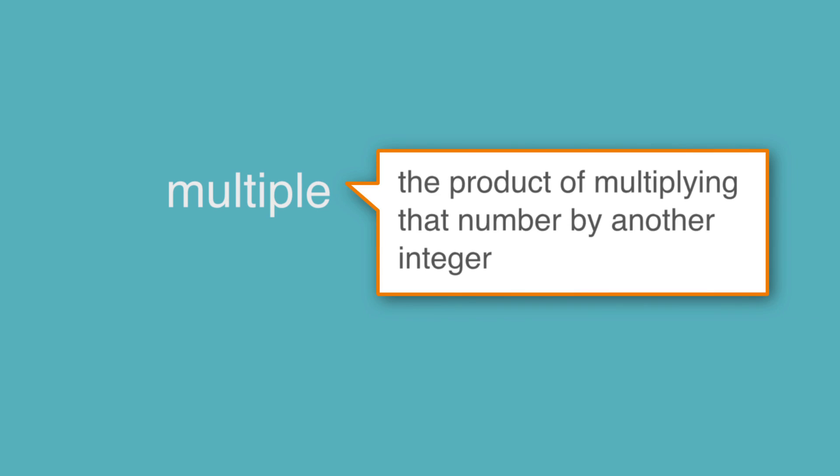Now that we've knocked out factors, let's go back to that other word, multiple. A multiple of a number, n, is the product of multiplying that number by another integer.